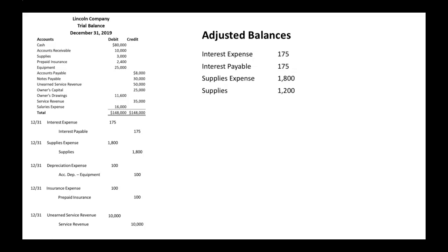Depreciation expense: we didn't have any depreciation expense in our trial balance, so its balance will be $100. And same with our accumulated depreciation on that equipment. Insurance expense: we didn't have any insurance expense in our trial balance either, so we'll just show the $100 for insurance expense on our adjusted trial balance.